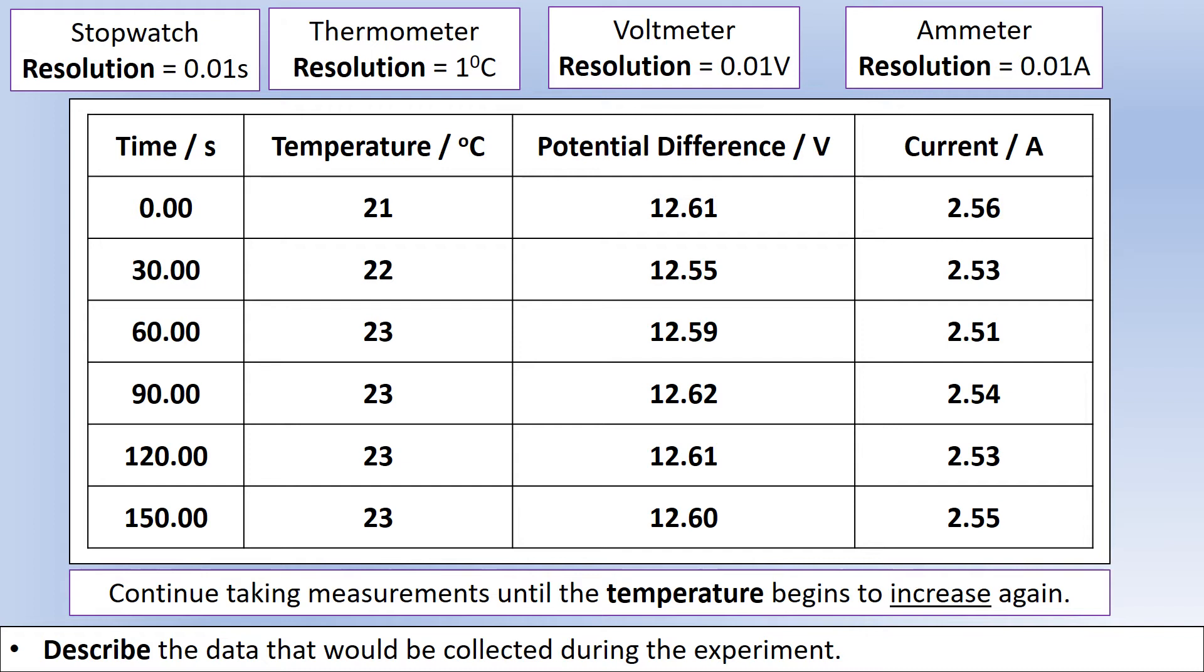In terms of thinking about collecting data appropriately, all the times are to two decimal places. The temperatures are no decimal places because our thermometer resolution is only one degree. Our voltmeter and ammeter are both to two decimal places because their resolutions are both two decimal places.